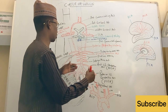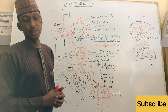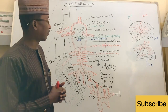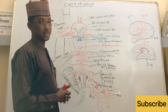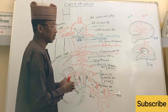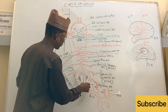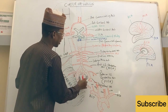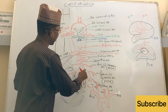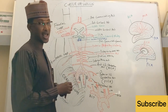The two vertebral arteries enter into the transverse foramina of the cervical vertebrae, and as soon as they pass through the transverse foramina, they enter into the cranium through the foramen magnum. At the level of the foramen magnum, these vertebral arteries enter the cranium and unite together at the level of the pontomedullary junction to form the basilar artery.